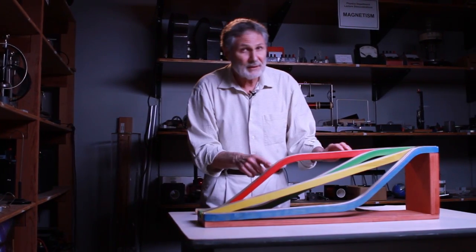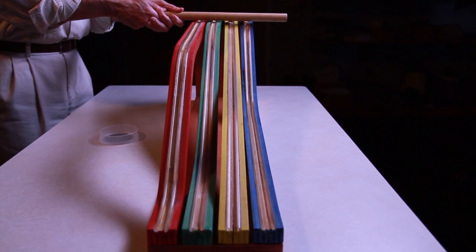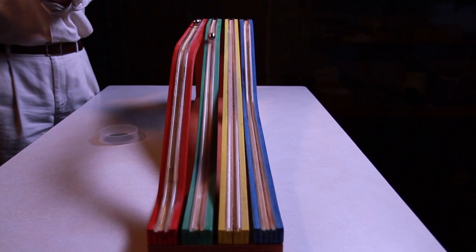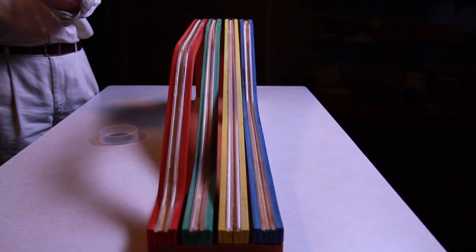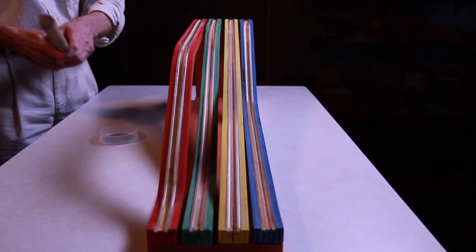And finally, as expected, the red. Let's watch this again in slow motion. Note that the order of the quickest to the slowest path is the same as the order of the ramps from front to back.